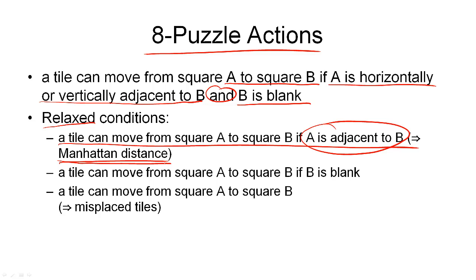The second one is, if we drop the first part of this definition so that the adjacency condition is dropped, then we end up with a heuristic that the tile can move from A to B if B is blank. And finally, we can have a heuristic if we drop both conditions that says a tile can move from A to B with no conditions. This then gives us the misplaced tile heuristic. We simply count those tiles that can move to where they need to be in one step.